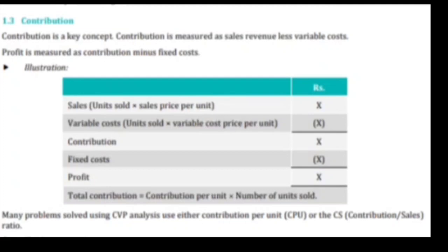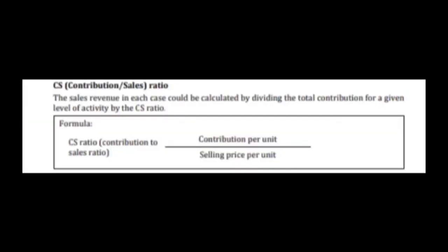First we need to know what is contribution margin. We have discussed it in marginal and absorption costing — whoever hasn't seen that lecture can view it. The contribution margin means sales minus variable cost. This gives us contribution, and then minus fixed cost gives us profit. You have to learn about contribution because this will help you throughout the entire lecture.